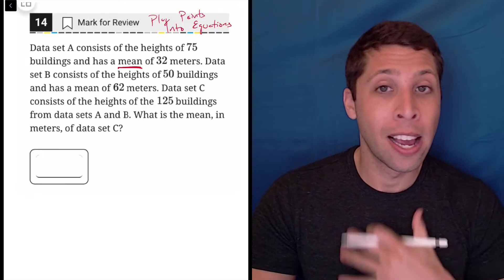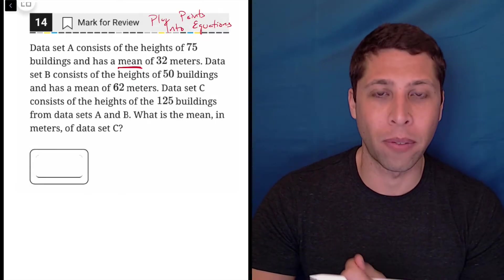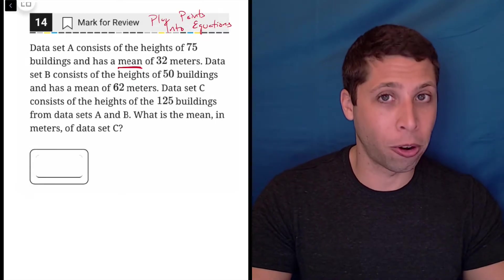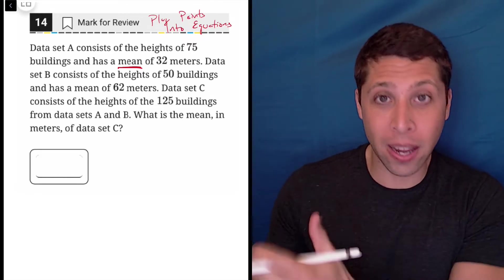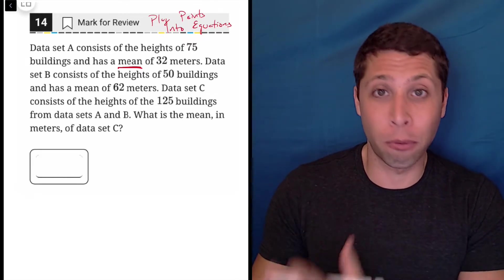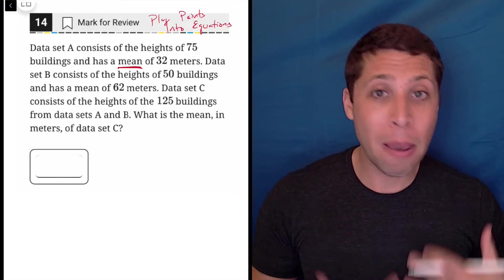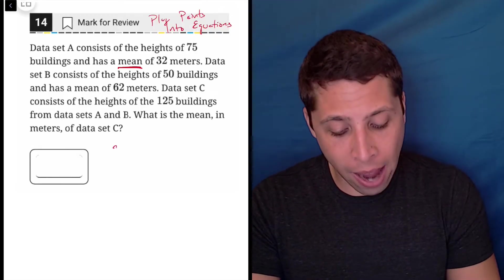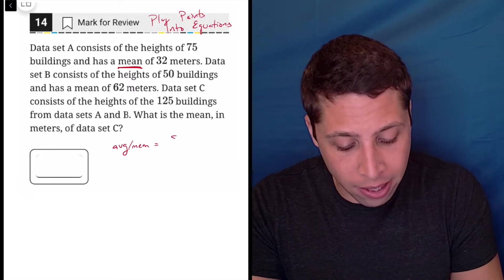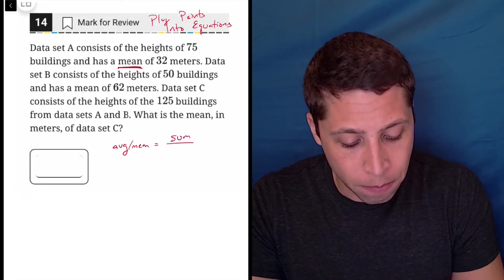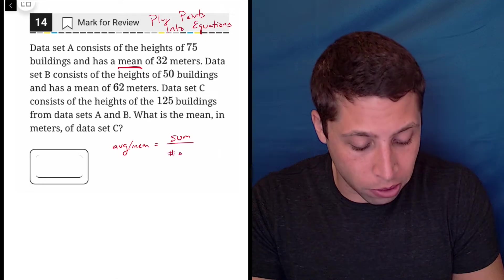Anytime I'm taking an SAT, every single math question, I'm asking myself the same thing: Are there points? Are there equations? If I see a question with lots of numbers, odds are good there's something I can do with those, plug them into some formula. Maybe they give me one, maybe I just memorize one. The average formula, the formula for mean, is one that I've memorized. That is the sum of the numbers over the number of numbers.